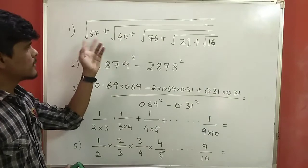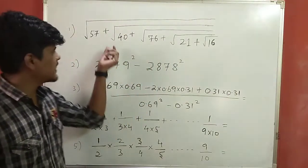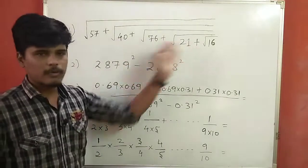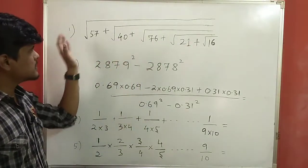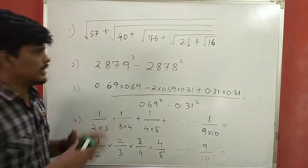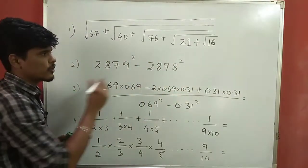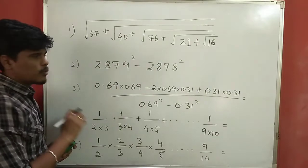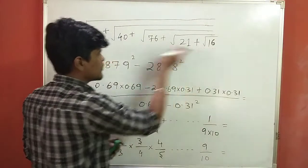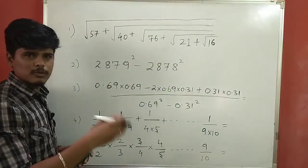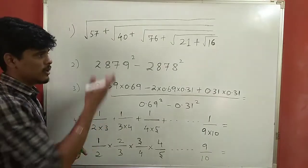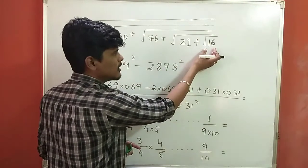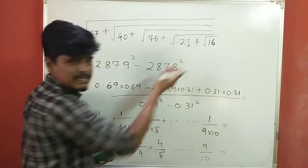First question — let's take the square root of different numbers added together. What do we do? If we start from this side, we will start with the operation. If you know what to do with this, we will work through the roots step by step. It will be very easy to evaluate the square root at each step.